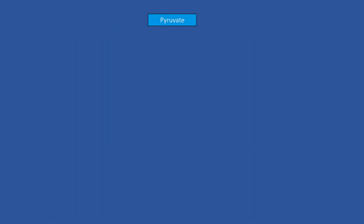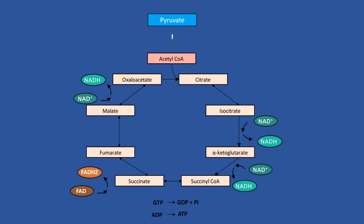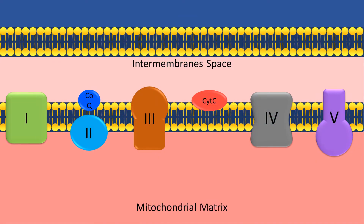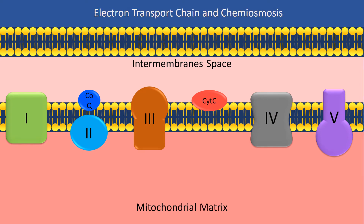In a previous video, we discussed that during the Krebs cycle, acetyl-CoA is utilized to generate NADH and FADH2, which subsequently are used in a set of redox reactions that transfer electrons in the electron transport chain to generate large amounts of ATP. In today's video, we will be discussing in detail the electron transport chain and chemiosmosis, and you will understand everything you need to know about these topics.